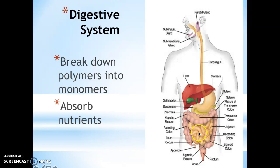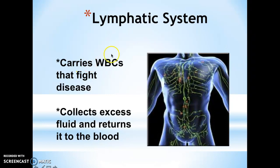The next one is the lymphatic system. The lymphatic system is the system that carries white blood cells that fight disease, and it also collects excess fluids and returns them to the blood. It is kind of similar to the circulatory system, but it is a whole system on its own.